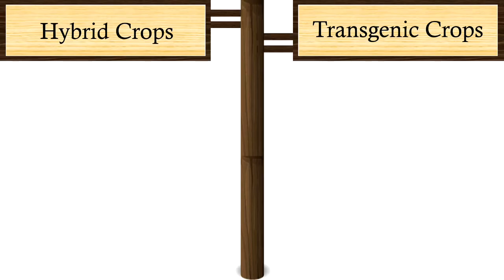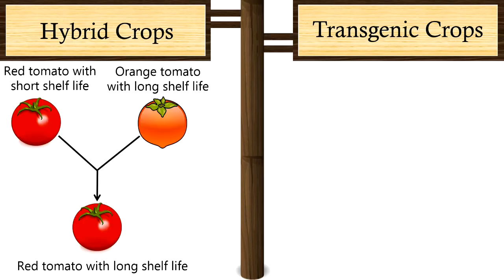To overcome this problem, the concept of hybridization was introduced. In this process, two plants with desired traits are crossed to obtain a plant which has characteristic properties of both. For instance, crossbreeding two plant varieties — one having red colored tomatoes with shorter shelf life and other having orange tomatoes with longer shelf life — produces a tomato plant with red tomatoes and longer shelf life. But the probability of success in this process is quite low, therefore this process was also not satisfactory. Finally, agricultural biotechnology introduced the idea of transgenic crops. These genetically modified crops increased production up to 200 to 300 times.